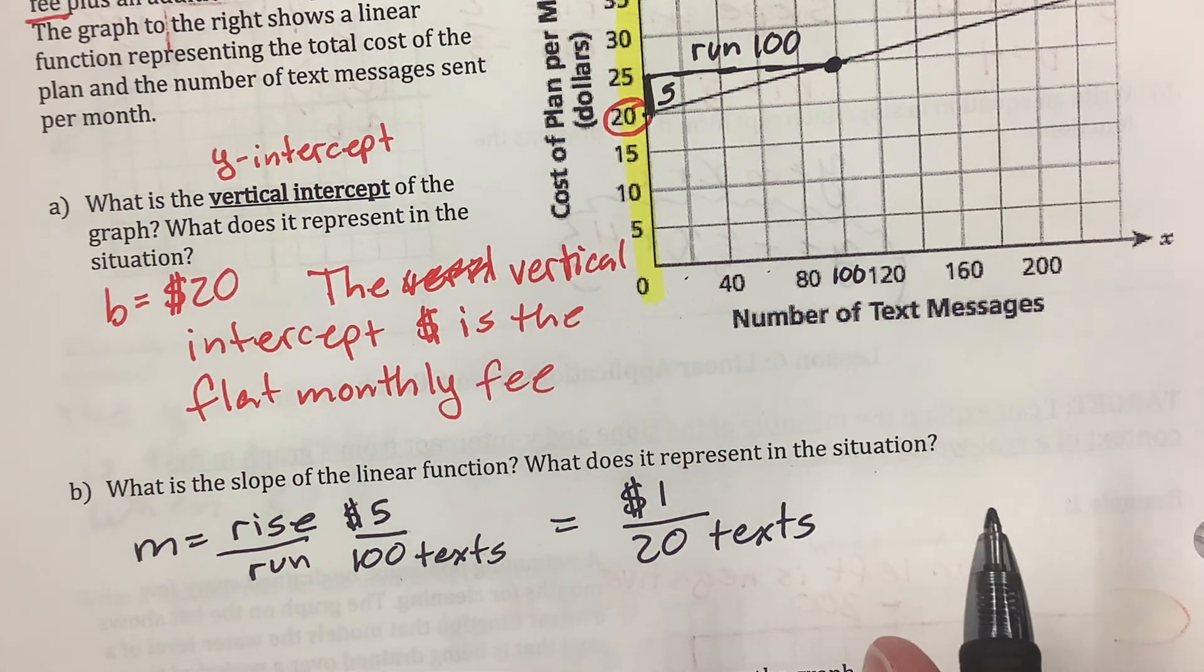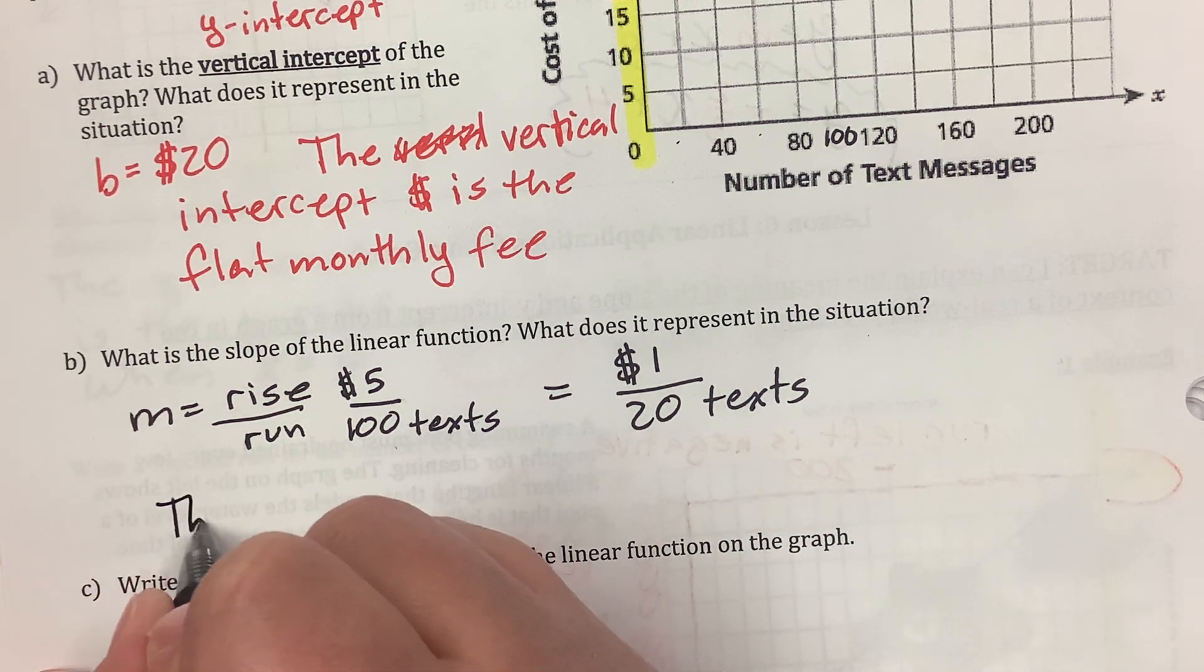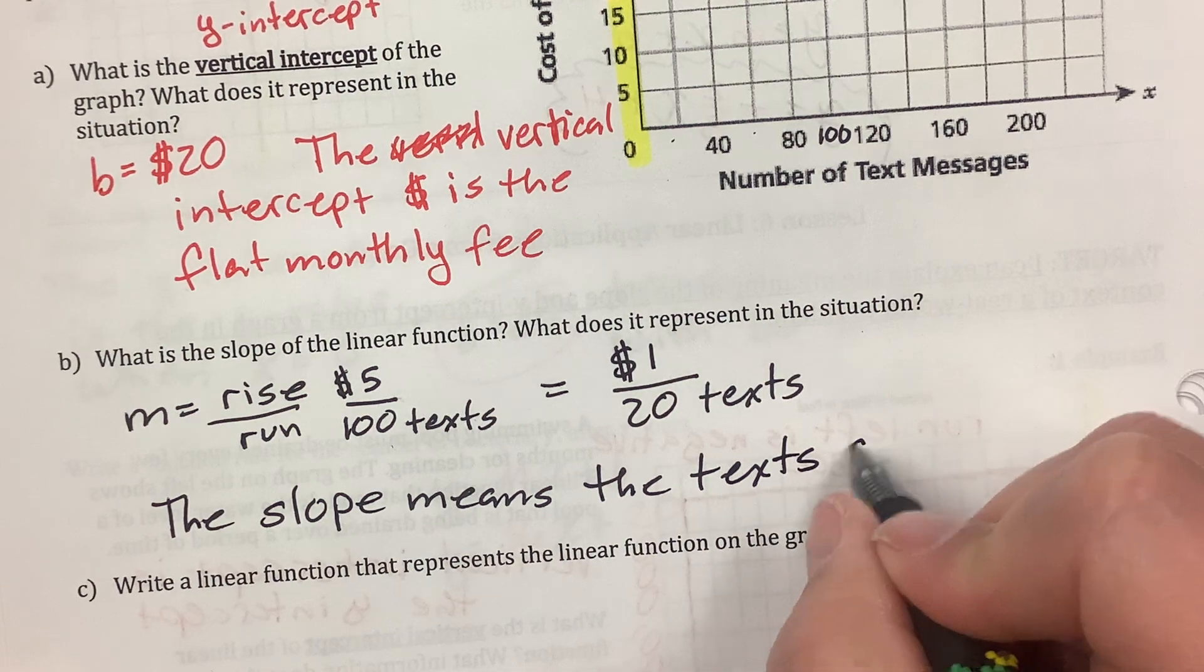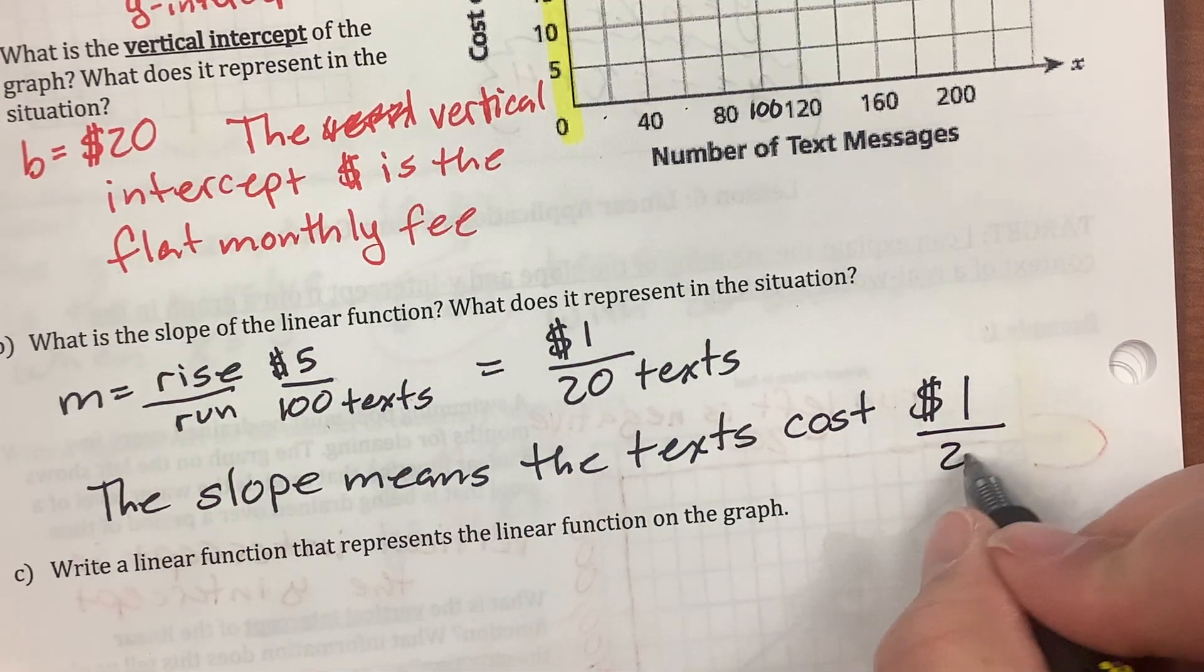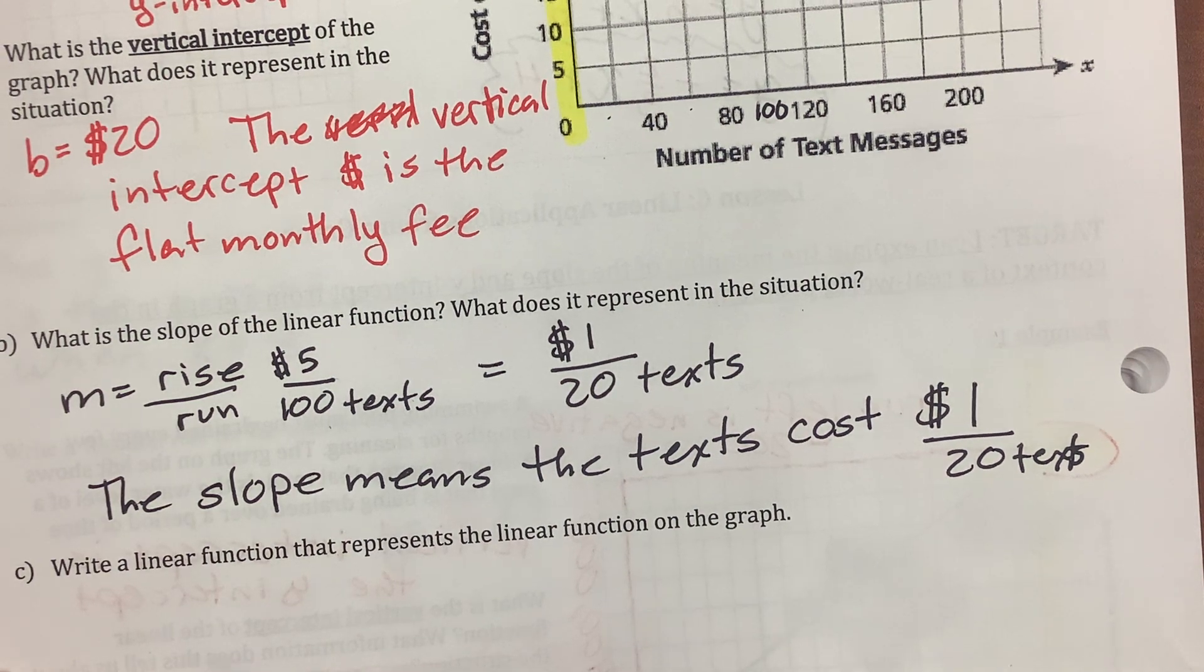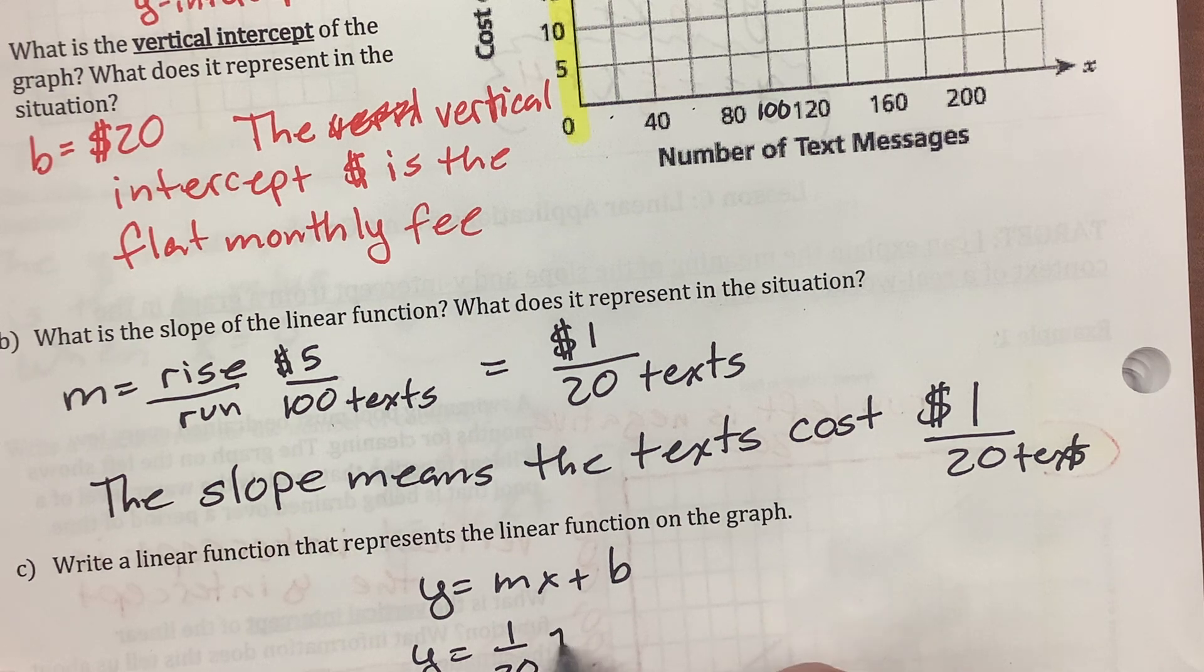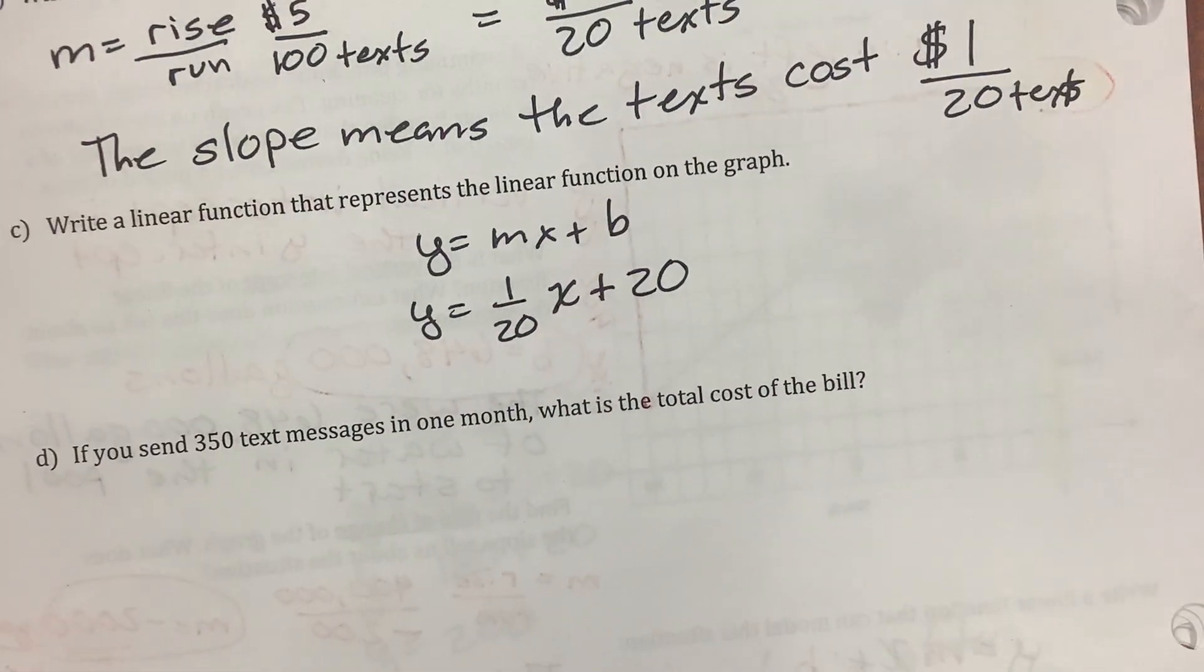What does that mean? It means every time I text 20 people, I have to pay a buck. The slope means the text messages cost a dollar for 20. Write a linear function that represents this. y equals mx plus b. m is 1 over 20. So, y equals 1 over 20 x plus b is $20.